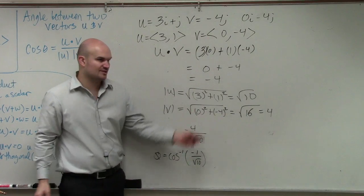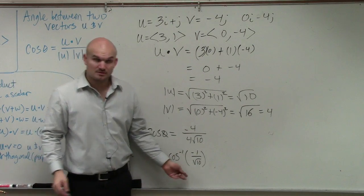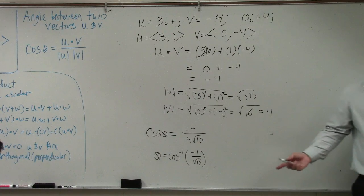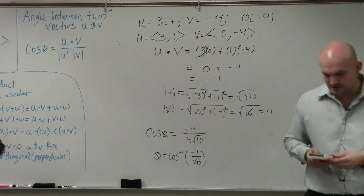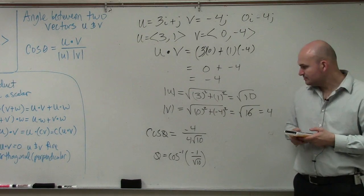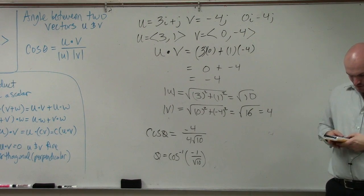Does everybody see how the 4 divides to 1, and I'm left with this? Because you want to solve for theta, you've got to use cosine inverse. Now I'm just going to take my calculator and do cosine inverse of negative 1 divided by the square root of 10.